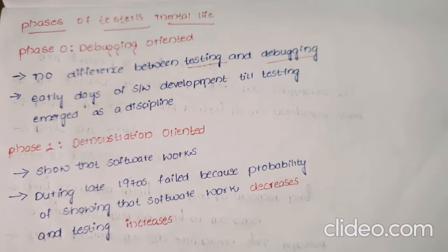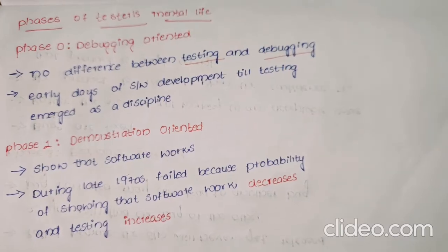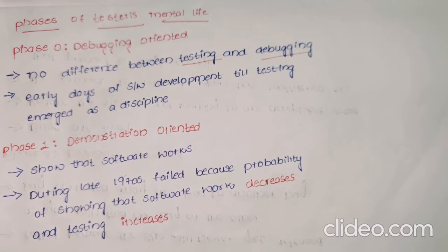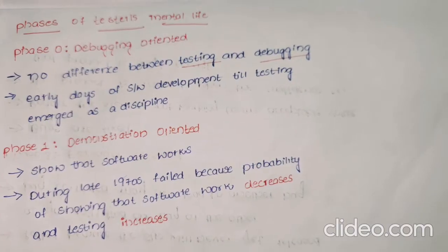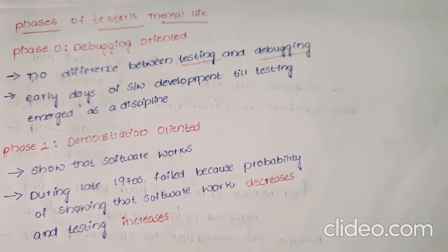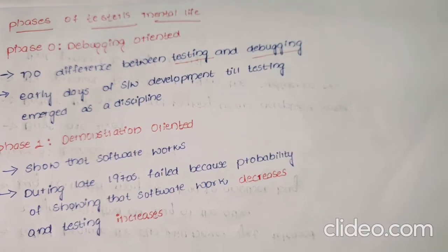In today's video we are going to discuss the phases of testing maturity life. There are totally five phases: Phase 0 debugging oriented, Phase 1 demonstration oriented, Phase 2 destruction oriented, Phase 3 evaluation oriented, and Phase 4 prevention oriented.